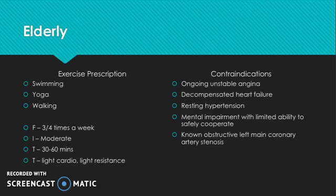The first group of people we'll be looking at is the elderly. Contraindications more common with elderly people include ongoing unstable angina, which is an absolute contraindication. The reasoning is that not enough blood can get to the heart, causing a lack of oxygen supply, which can obviously cause a lot of damage. The fact that it's unstable is why it's an absolute, because it's not being controlled.